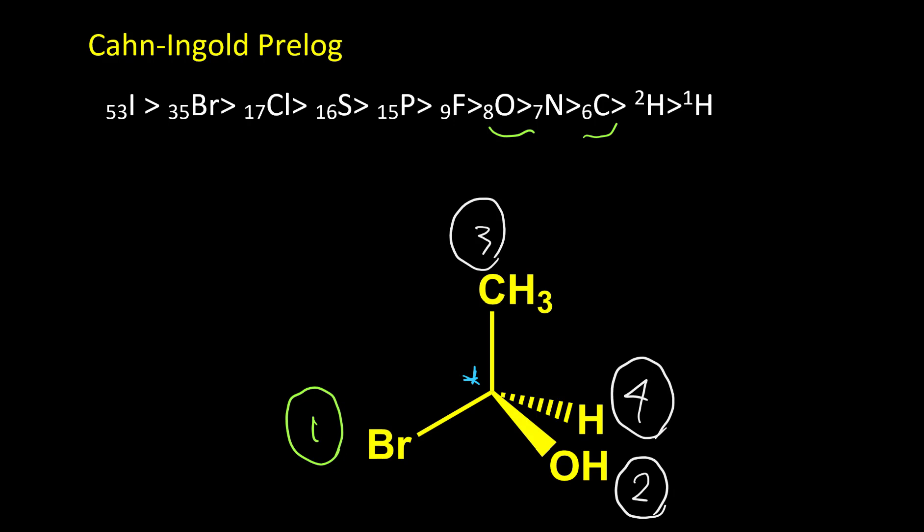For step two, we need to arrange the molecule in three dimensions so that number four is staying in the back of the molecule. In this example, number four is a dash, and dash means it is in the back. So we don't need to take any action for this example.